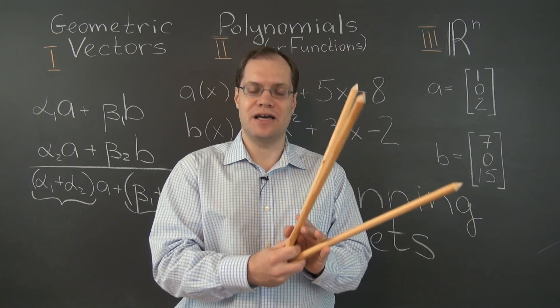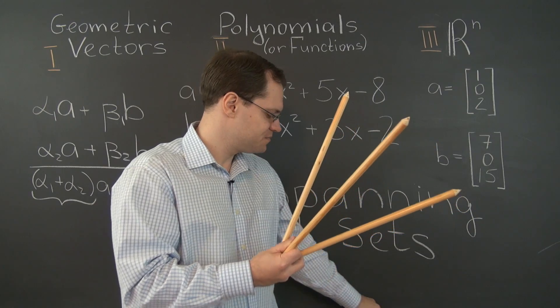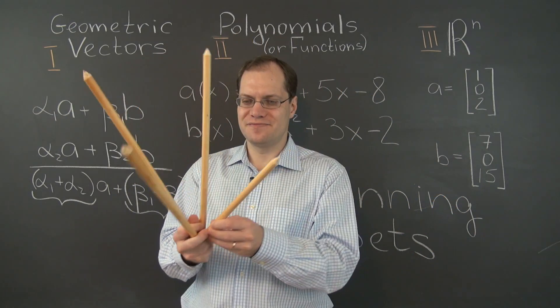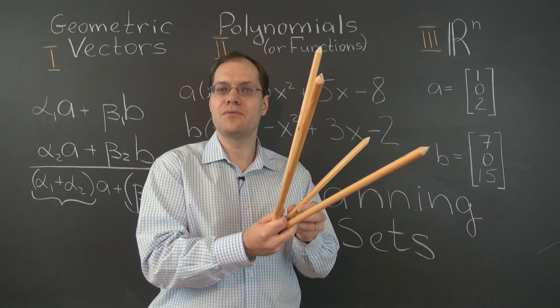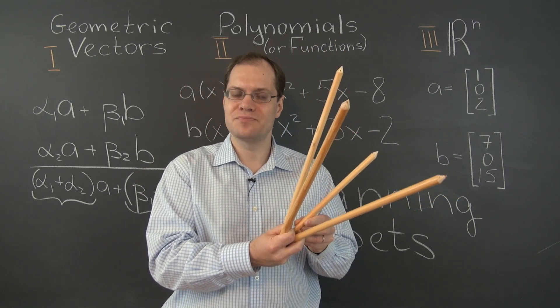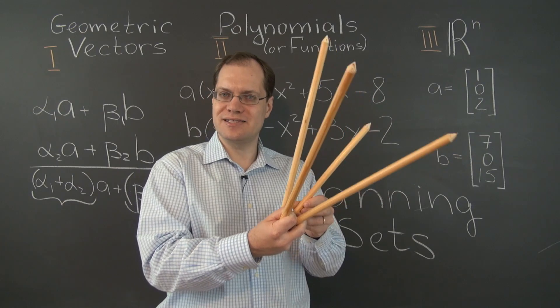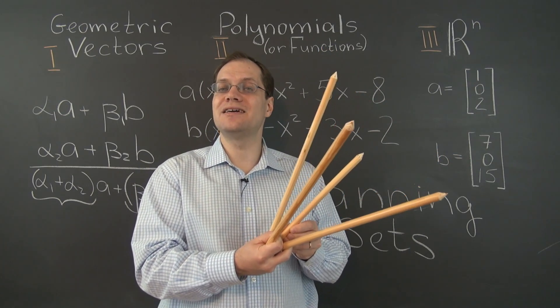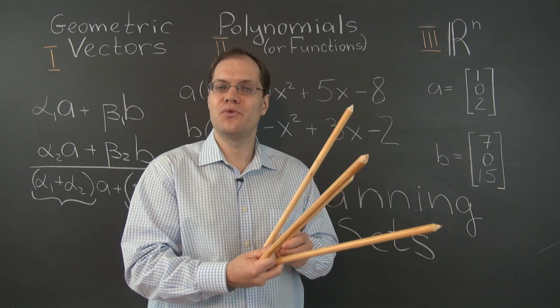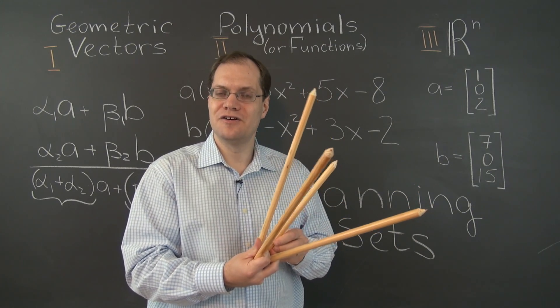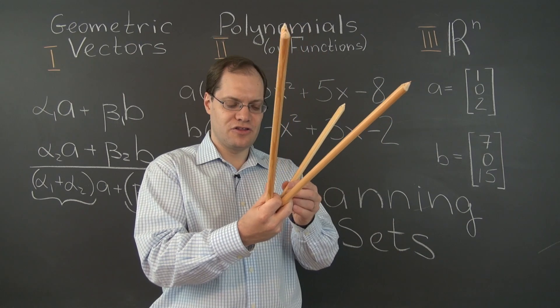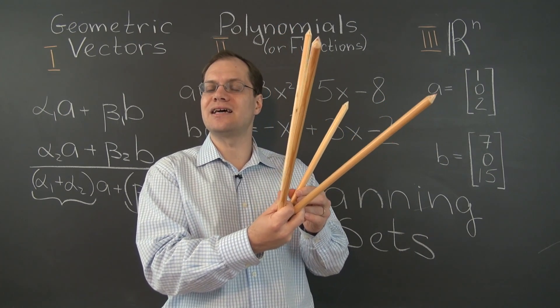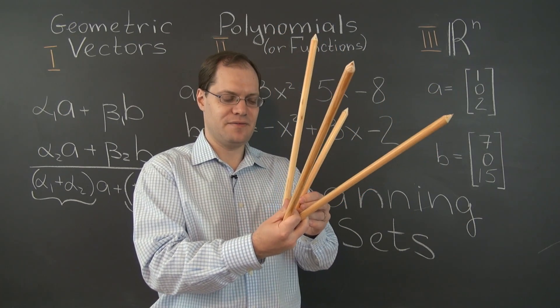Let's add a fourth vector. Like this. Now is this still a spanning set? Well, of course it is. Because by augmenting a set of vectors, we cannot take the spanning property away. We can only make it better. So if the smaller set was a spanning set, then the larger set is a spanning set as well. Okay, there you go.